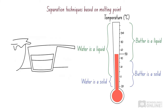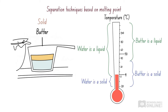Then we place the pot into a fridge and leave it to cool to 4 degrees Celsius. The butter will cool below its melting point, so it will freeze into solid butter. In contrast, the water will remain as a liquid, since it doesn't freeze until it reaches zero degrees Celsius. This allows us to easily separate the solid butter from the liquid water. Using this same process, we can separate a wide variety of mixtures.